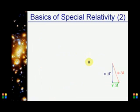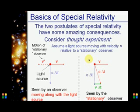The two postulates of special relativity have some amazing consequences. Consider thought experiments. When the light source is seen by an observer moving along with the light source, he will see the speed of light as the constant speed.